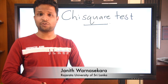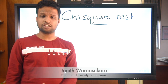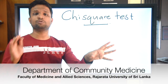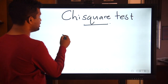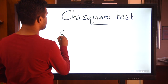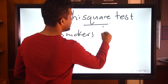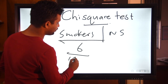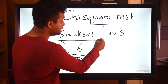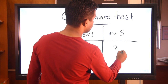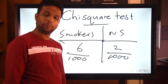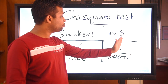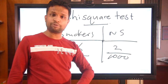Welcome to the lecture on chi-square test. In the previous lecture we discussed about t-test and z-test for one proportion and two proportions. We need to compare two populations — smokers and non-smokers. Among smokers, six out of a thousand people have lung cancer; among non-smokers, two out of a thousand people have cancer. To compare these proportions you can apply the two-proportion z-test or two-proportion t-test.